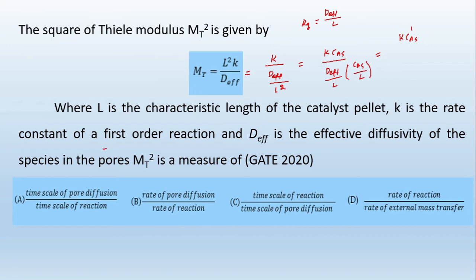Divided by - I can write D_effective by L as k_g, that is mass transfer coefficient, times C_as minus 0 divided by C_as minus 0, divided by L, which is nothing but concentration gradient.